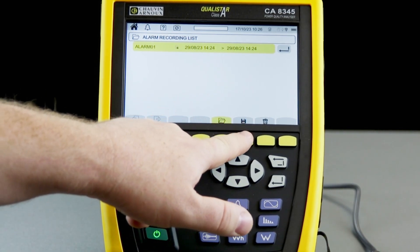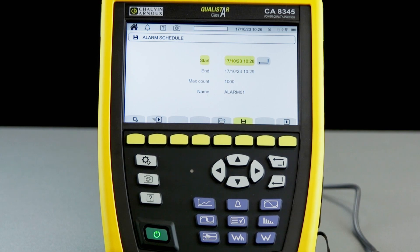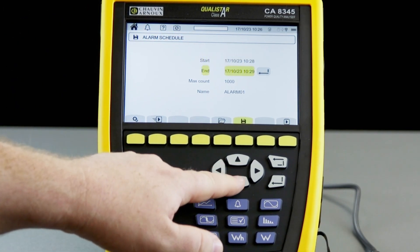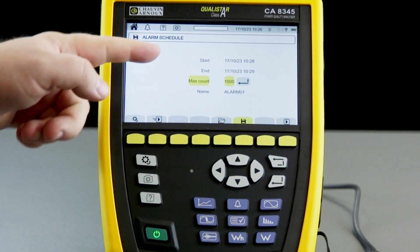To set a new session, we go to the disk icon and can set the start and stop time for the session. We can then choose the maximum number of alarms we want to record and set the alarm monitoring session name.